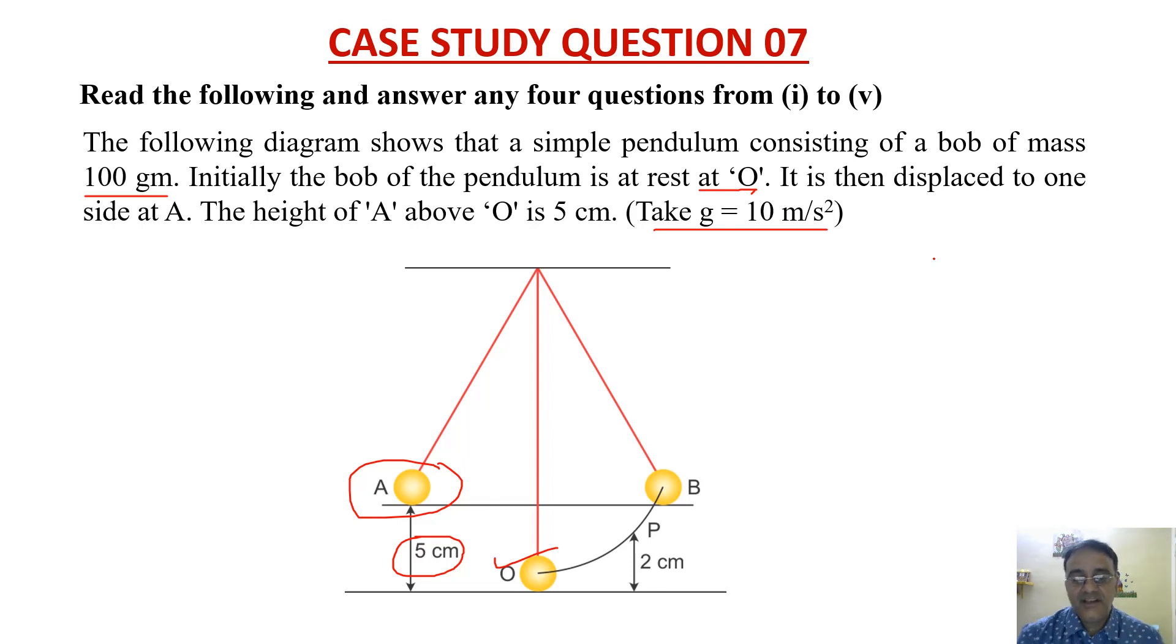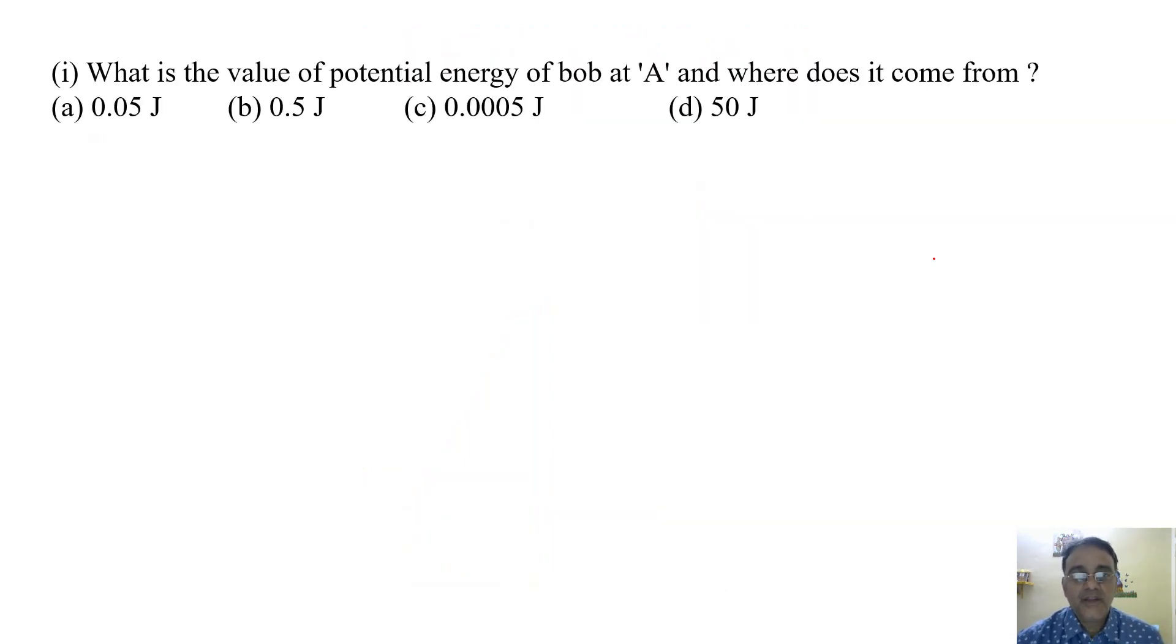Now based on this context some questions have been framed. So let us start with the question. What is the value of potential energy of bob at A and where does it come from? So actually the work done in raising the bob through a height of 5 centimeter, that is against the gravitational attraction, gets stored in the bob in the form of its potential energy.